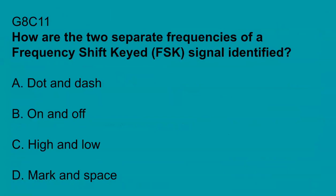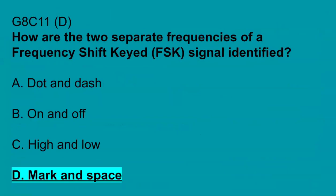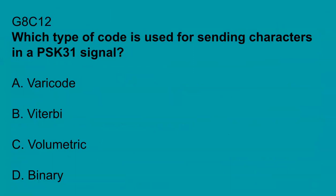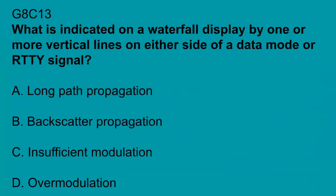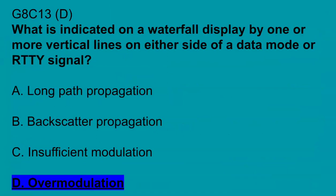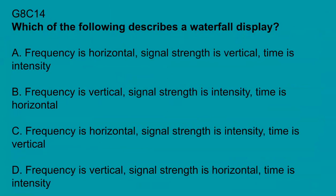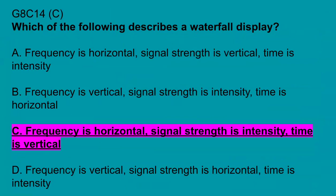G8C11: How are the two separate frequencies of a frequency shift keyed signal identified? Mark and space. G8C12: What type of code is used for sending characters in a PSK31 signal? Varicode. G8C13: What is indicated on a waterfall display by one or more vertical lines on either side of a data mode or RTTY signal? Over-modulation. G8C14: Which of the following describes a waterfall display? Frequency is horizontal, signal strength is intensity, and time is vertical.